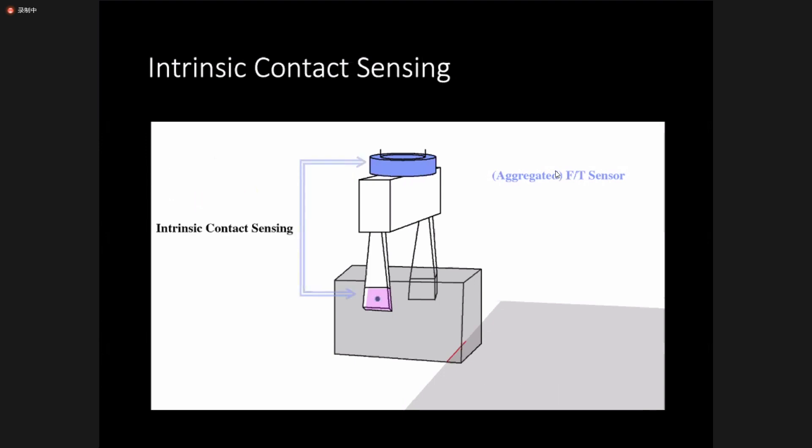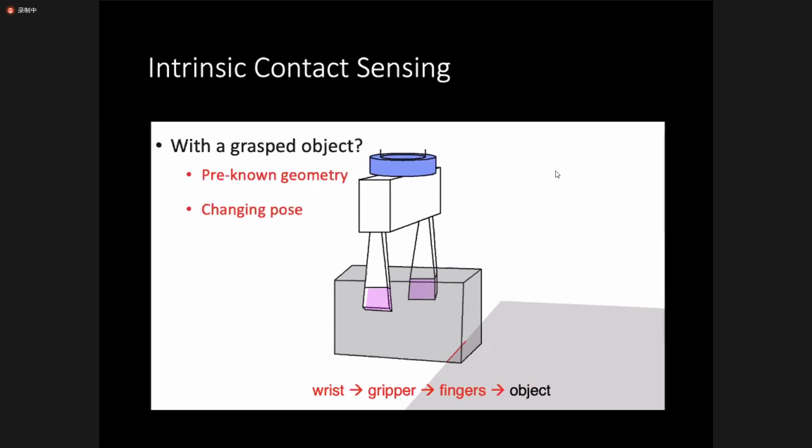Intrinsic contact sensing works well for many scenarios, but to apply in manipulation, we have to make assumptions that the geometry of the wrist, gripper, and finger manipulation chain is precisely known. However, if an object is added to the manipulation chain, the assumption of known geometry becomes more impractical, because precise knowledge of the geometry of the object is usually not easy to get, and the pose of the grasp is easily subject to change.